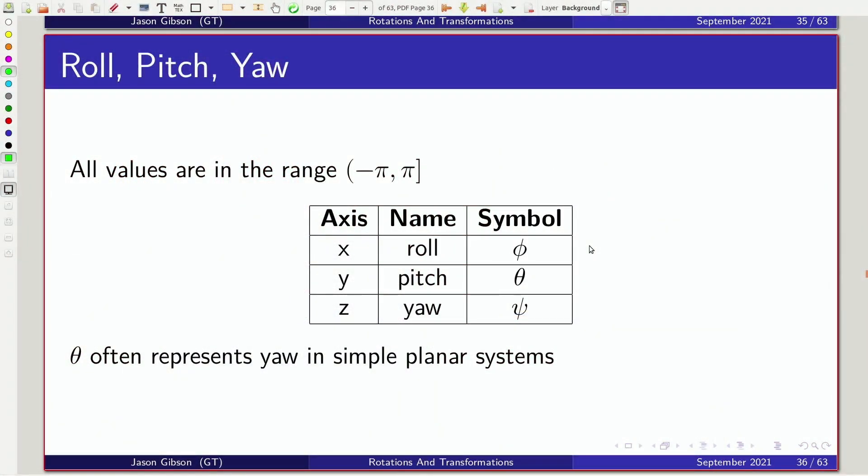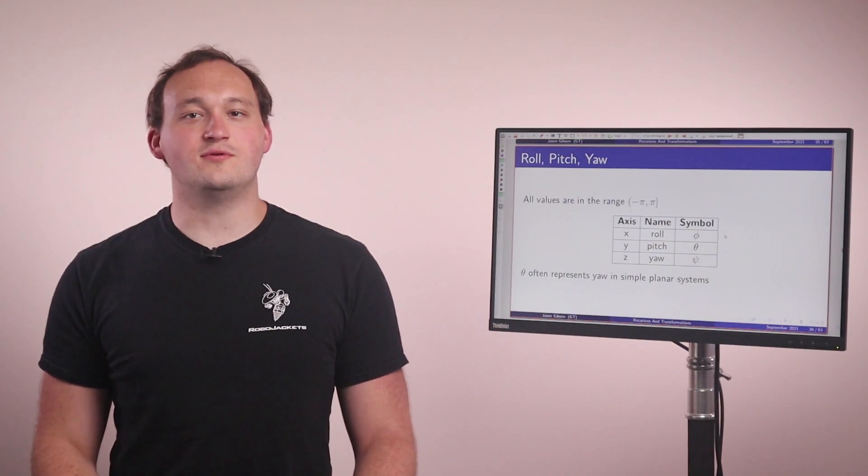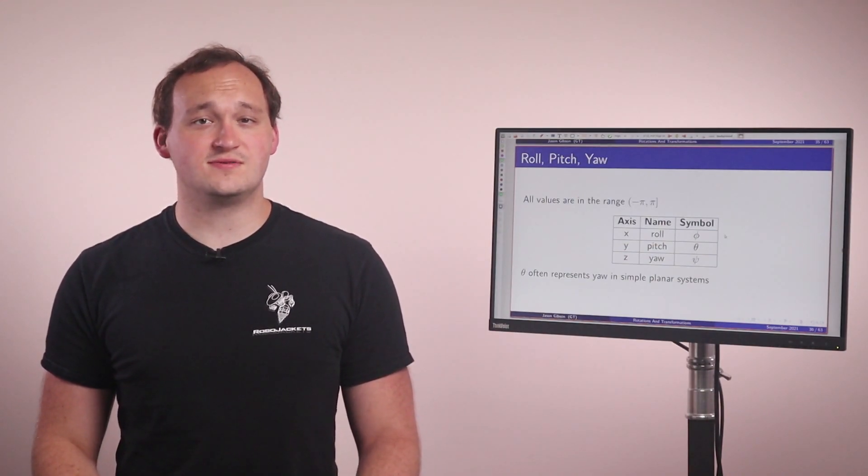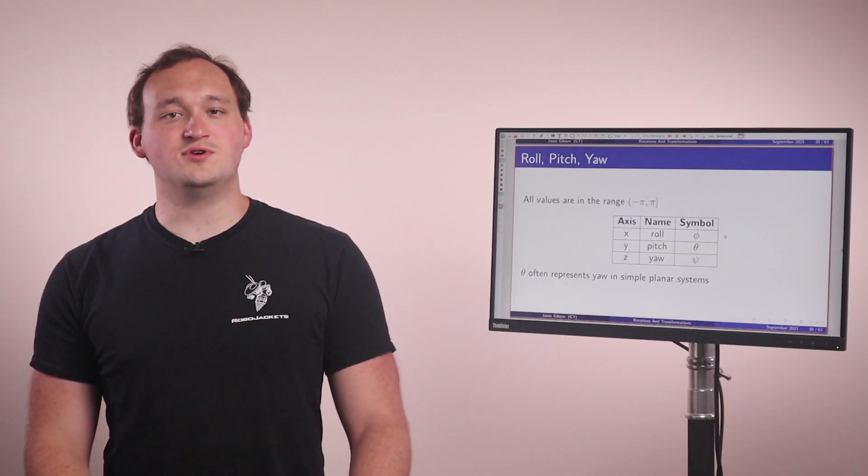Typically angles are defined in the range of negative pi to pi and are in radians. In this course we will adopt the notation of phi, theta, psi, but please note that rotations do not have any hard set conventions. There is a very good chance you will run into notation that you are not familiar with at some point. So as per usual, make sure to check the notation when you obtain a new source.